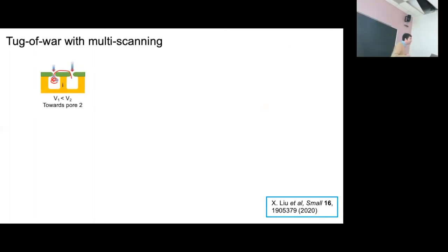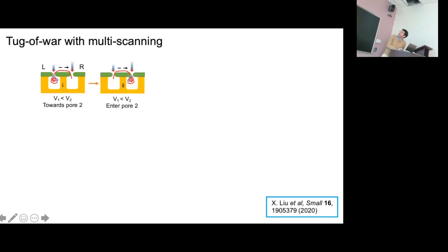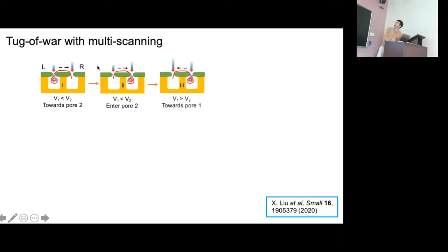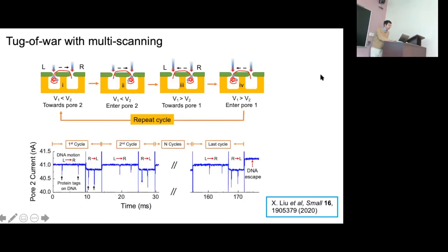We also developed an approach to continuously scan the DNA — not just pass it through once, but go back and forth repeatedly. We drive DNA from pore one to pore two; it has two labels on it. When the number of tags passing through pore two reaches a preset number — in this example two — we reverse the bias via the FPGA, and it goes back. We repeat the cycle and get multi-scanning.